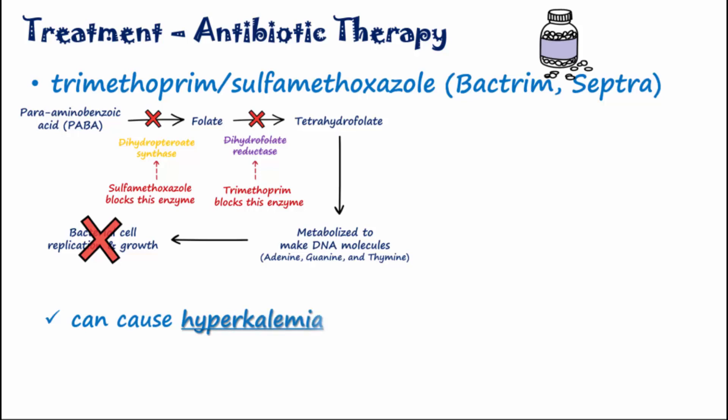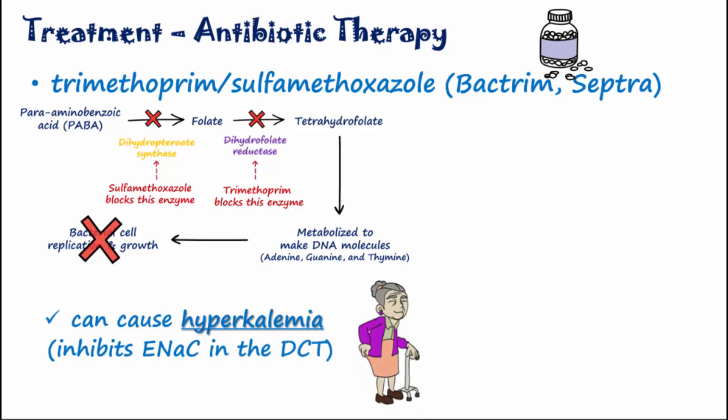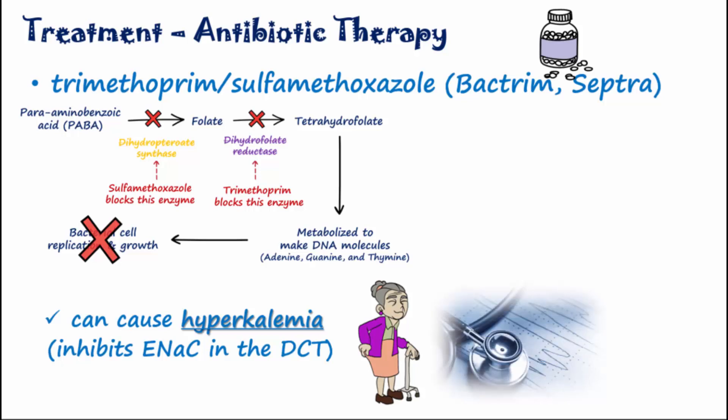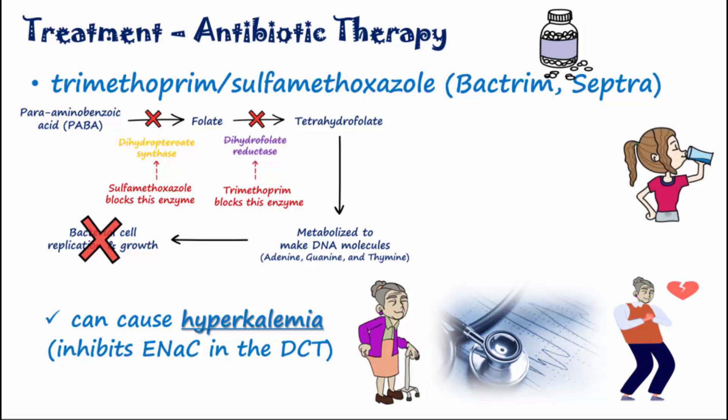It's important to remember that Bactrim can cause hyperkalemia. It does this by inhibiting ENaC in the distal tubule. Consider the elderly patient who is going to be put on Bactrim for bacteriuria when she's already on a stable dose of an ACE inhibitor and spironolactone. Hyperkalemia is the electrolyte imbalance that emergency department personnel are always chasing because of the lethal ECG changes it can cause on its way to cardiac arrest. Also, take Bactrim with plenty of fluids because it can crystallize in the urine and cause damage.